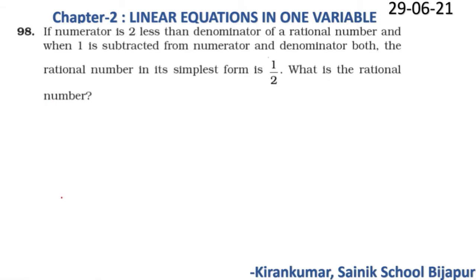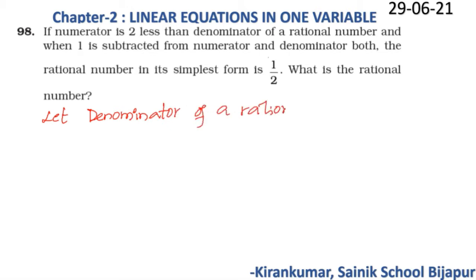Question 98: If the numerator is 2 less than the denominator of a rational number, and when 1 is subtracted from both the numerator and denominator the rational number in its simplest form is 1/2, what is the rational number? Let the denominator be x; then the numerator will be x − 2.